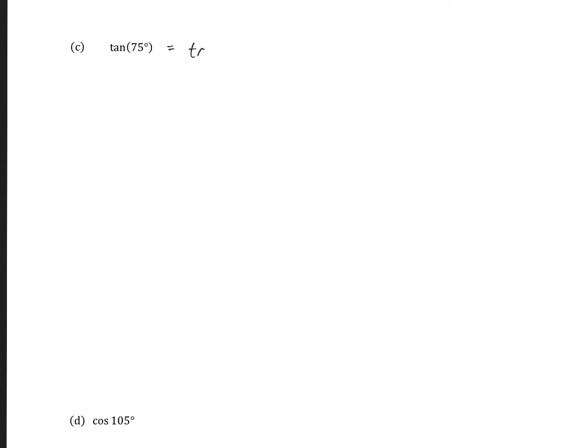Now let's look at tangent of 75 degrees. We don't know that value on the unit circle, so we need to write it as an addition or subtraction of values we do know. 75 can be written as tangent of 45 plus 30, both of which we know. The tangent addition formula is: tangent of s plus t equals tangent of s plus tangent of t, all over 1 minus tangent of s times tangent of t.